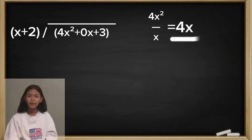After that, we will put our answer to the top of the same exponent of the variable. So we will put the 4x to the top of 0x. The next step, we will multiply the quotient to the divisor.